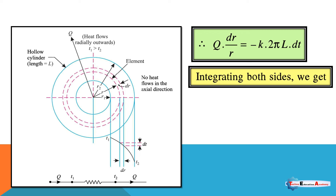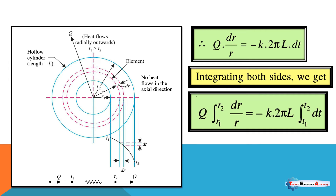Continuing from the previous equation, we integrate both sides. We are considering the limit r1 to r2 for the radius, and for the temperature we are considering the limit t1 to t2.